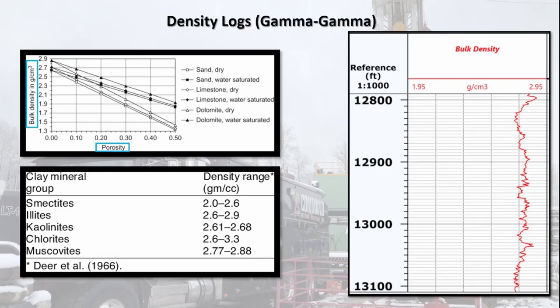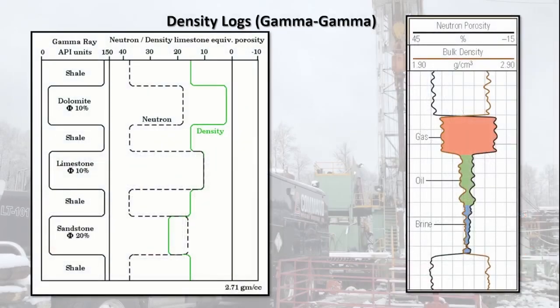This has similar accuracy issues as porosity logs when the formation contains clay due to its high variability in density. This instrument is used in combination with porosity tools to provide additional information about the true porosity and density of the formation. Some examples of this include if the matrix was incorrectly calibrated, if gas is suspected, or if the formation contains shale or clay.